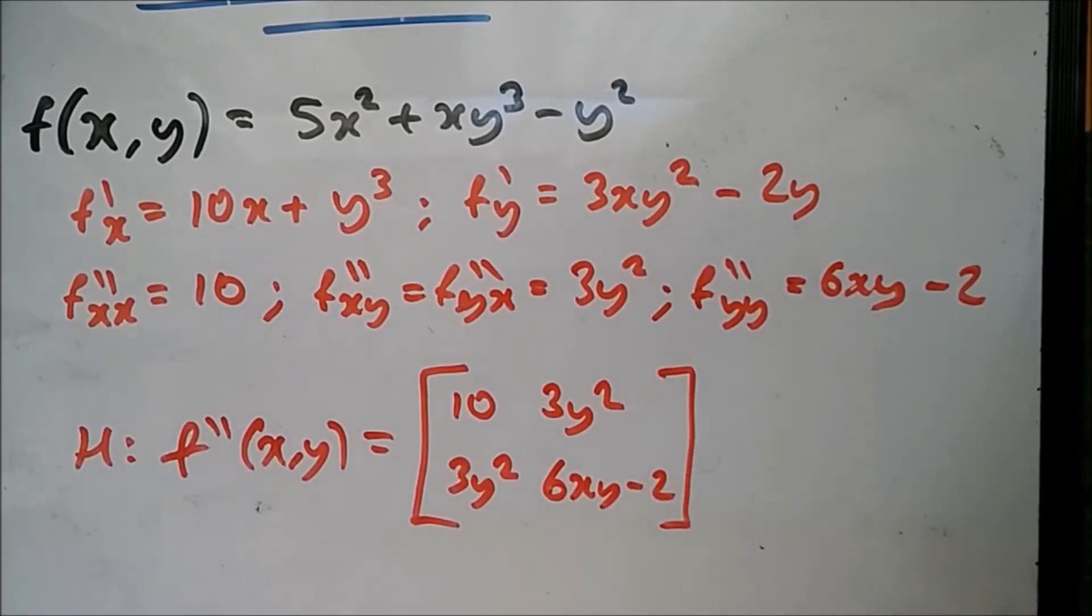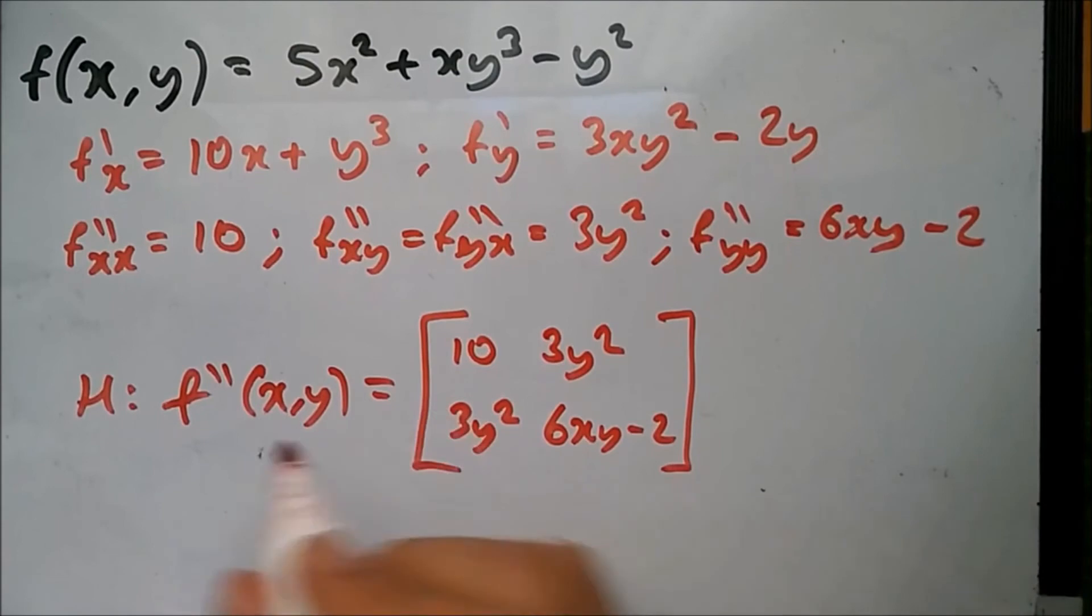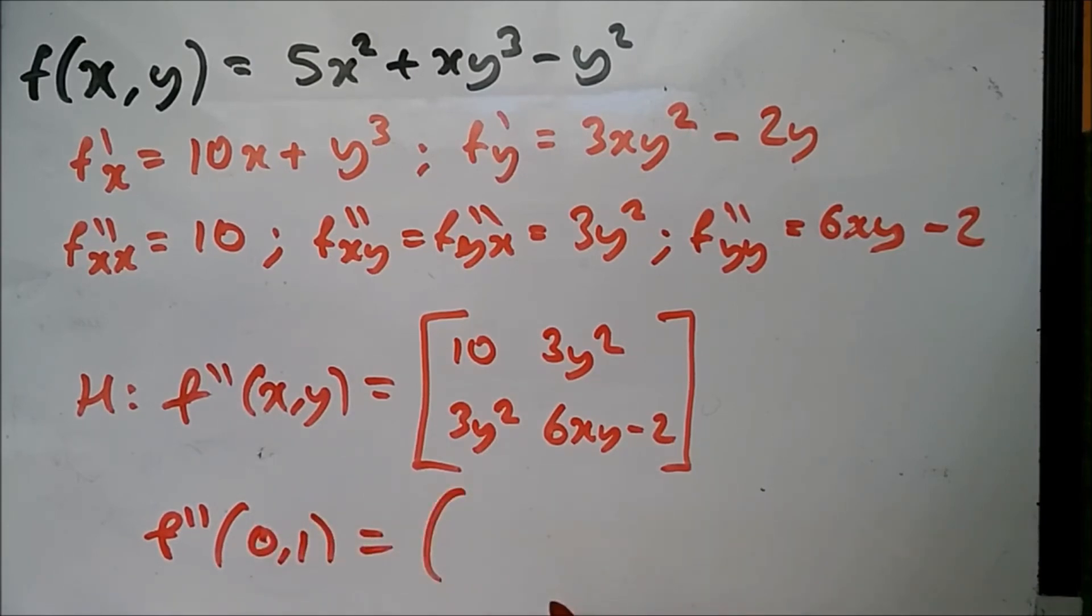This is how you do a Hessian matrix. Normally at this point we would substitute values. Particularly, maybe in a question they might tell you, compute the Hessian matrix at, for example let's just say (0,1). What would we get here? Replace X with 0 and Y with 1. This would just be 3, this would be 3, this would be 0, and this would be -2.